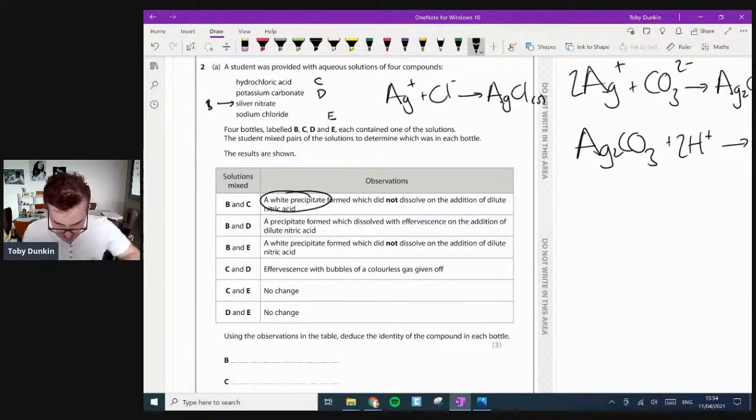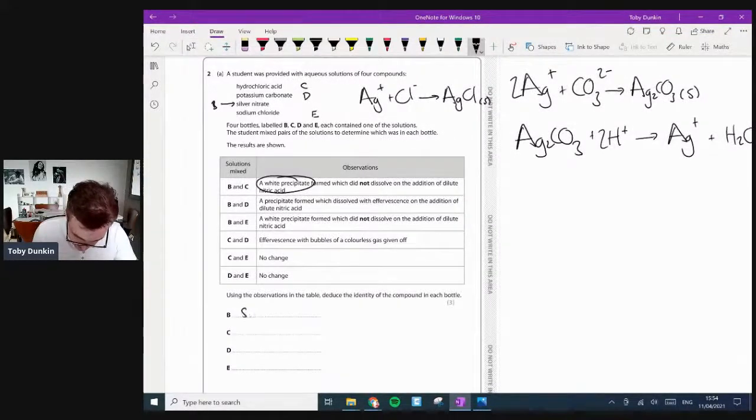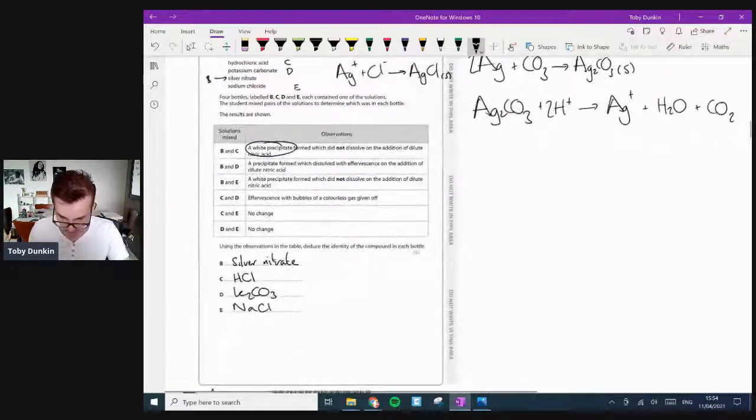C and D. Effervescence with a colorless gas, that would be an acid carbonate. The other addition there in nitric acid. So D is the carbonate, but C is going to be the acid. C is the hydrochloric acid. And then therefore that's going to be E. So B is silver nitrate. And then C is HCl. D is the potassium carbonate, K2CO3. And E is sodium chloride.